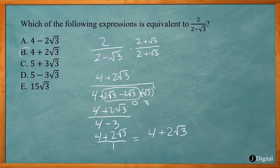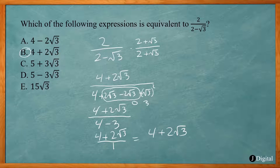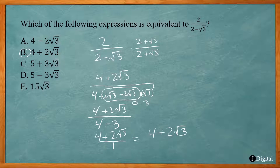Which is just 1, leaving 4 plus 2 square root of 3 over 1, or just 4 plus 2 square root of 3. So answer choice B. Remember, to solve this one we multiplied top and bottom by the conjugate, and when we do that the square roots cancel out in the denominator. You're squaring the square root of 3 at the end, so you have no more radicals on the bottom. You just switch the sign in the middle from minus to plus — that's multiplying by the conjugate.